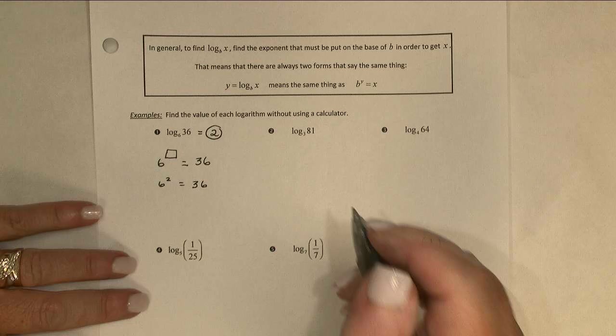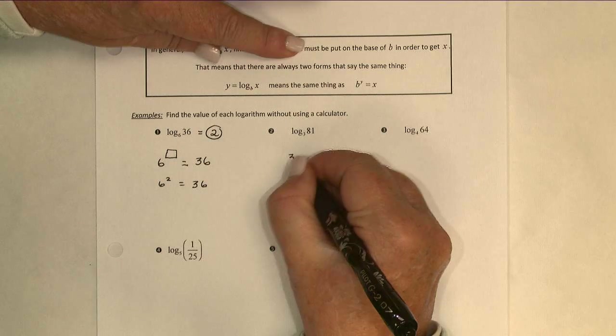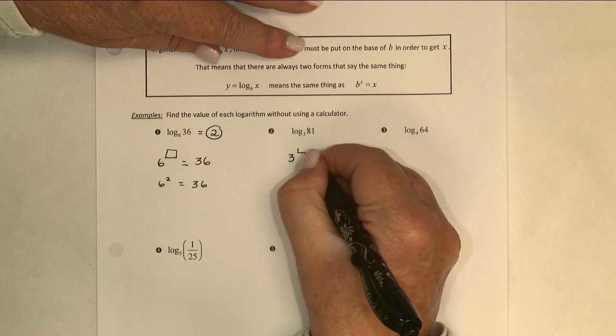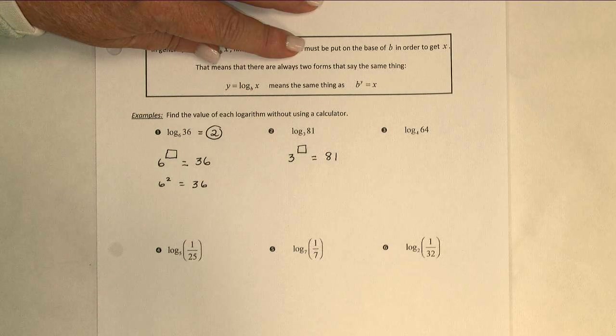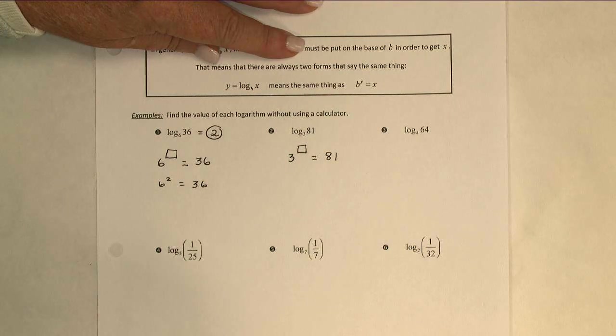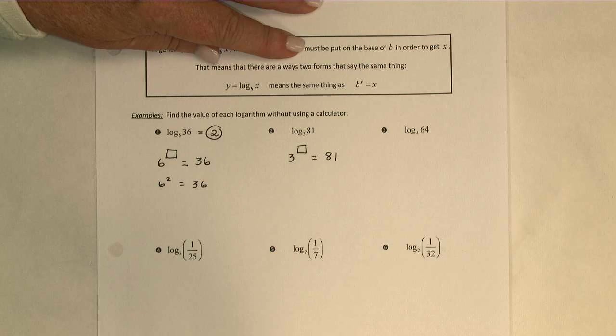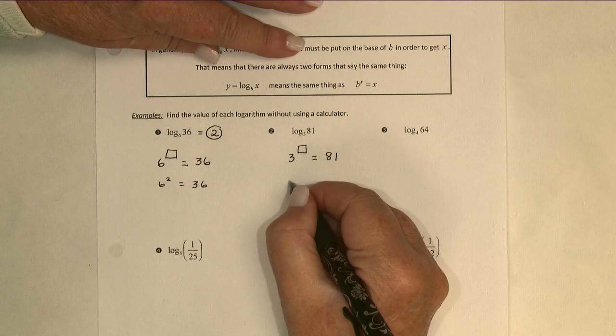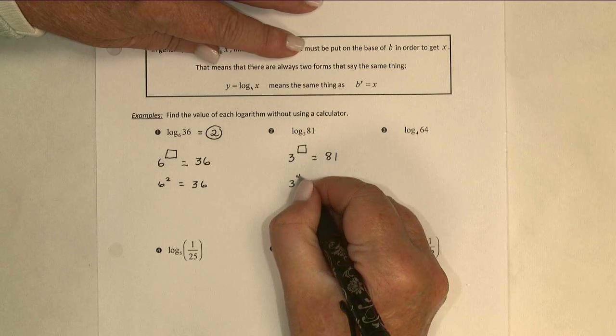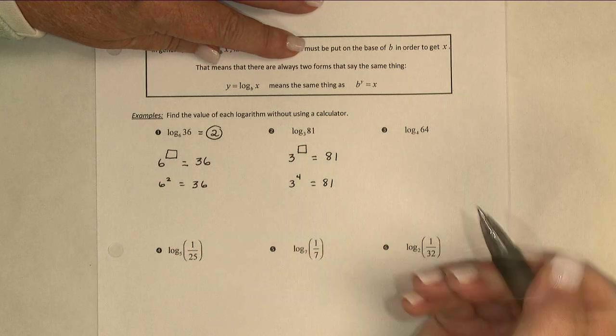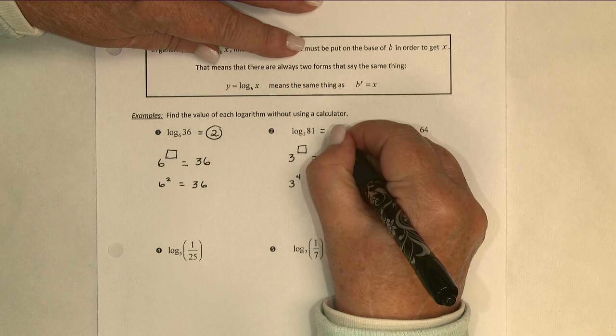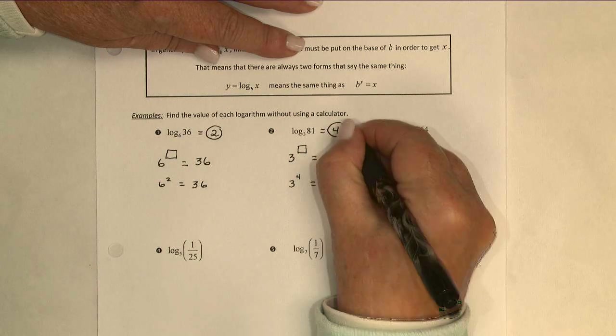Let's try a few more. Base of 3. And the question is, what power do I have to use to get 81? If you know those values from that chart we made, you probably know that 3 to the 4th power is 81. And so, the exponent I needed was 4. Therefore, the value of the logarithm is 4.